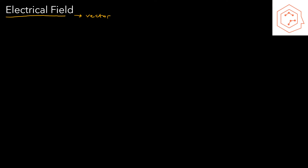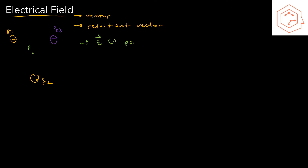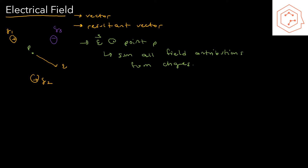When it comes to electrical fields, which are vector quantities, we need to add or sum these vectors to find the resultant. Suppose we have positive q1, positive q2, and negative q3, with a point p somewhere among them. To find the electrical field at point p, we simply sum all field contributions from the charges in the system.